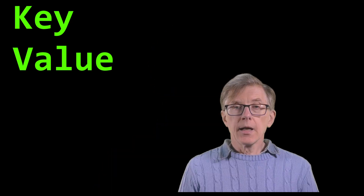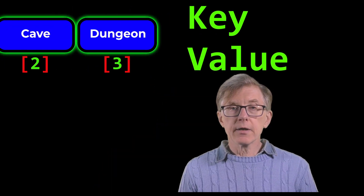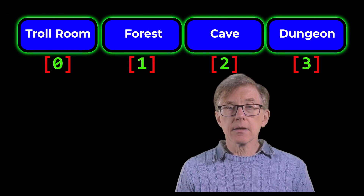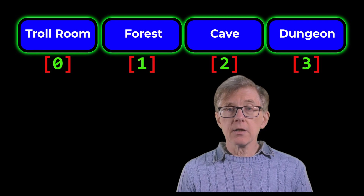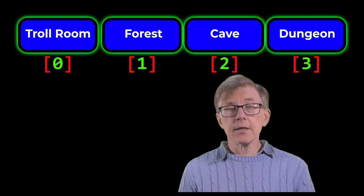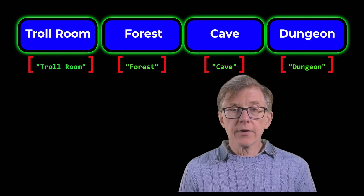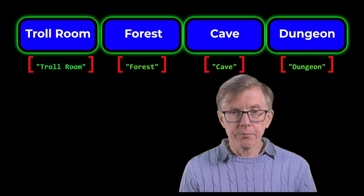A dictionary is a list of paired items. The first item in each pair is a key, and the second item is a value. In an array, we find an element using an index — the numerical position of an element in the array. In a dictionary, we find an element using its key.